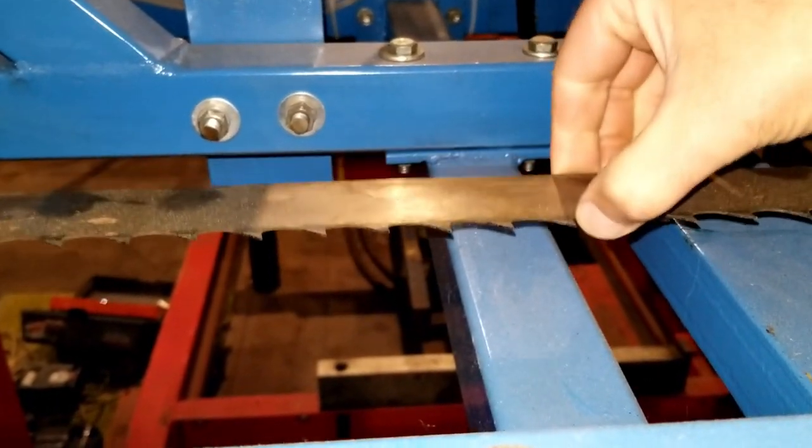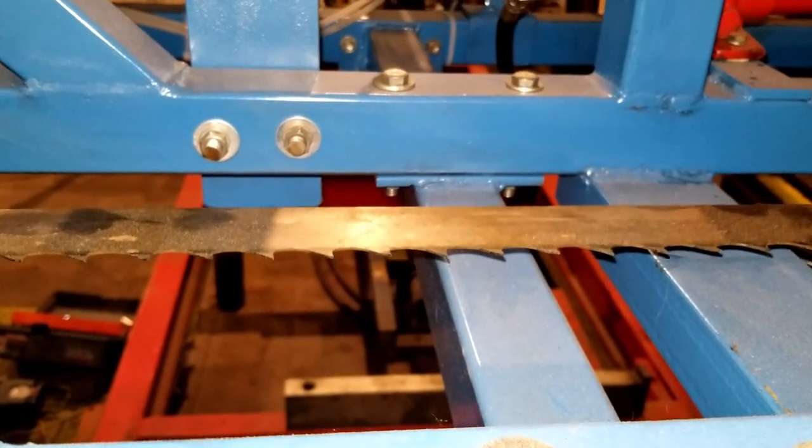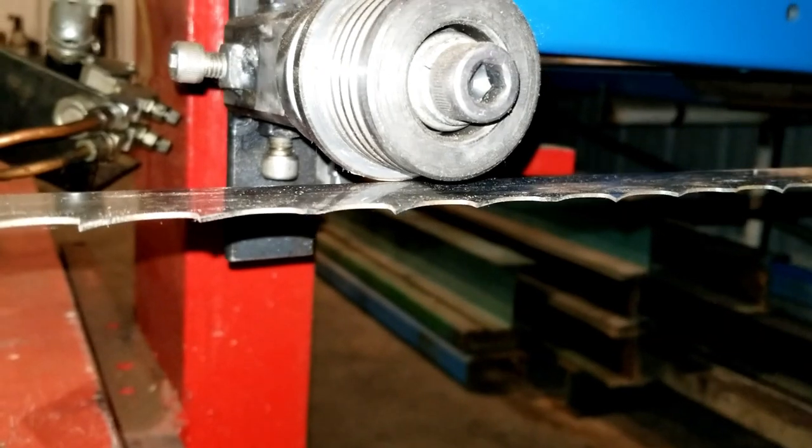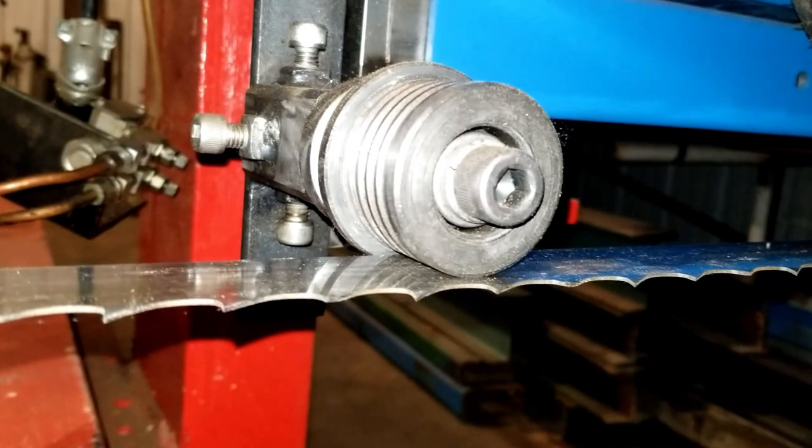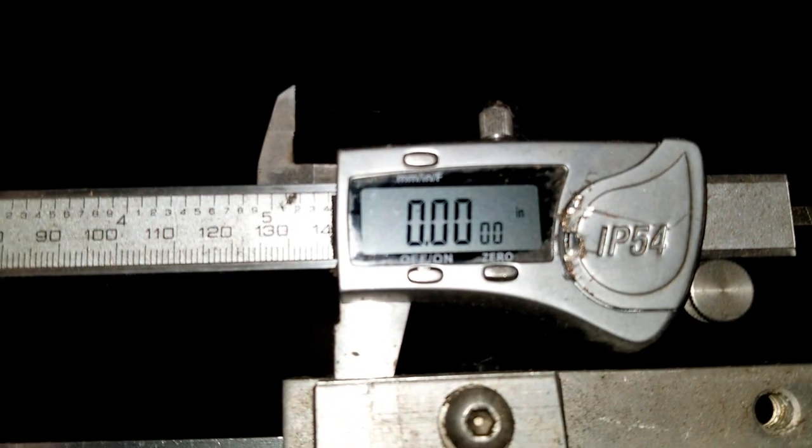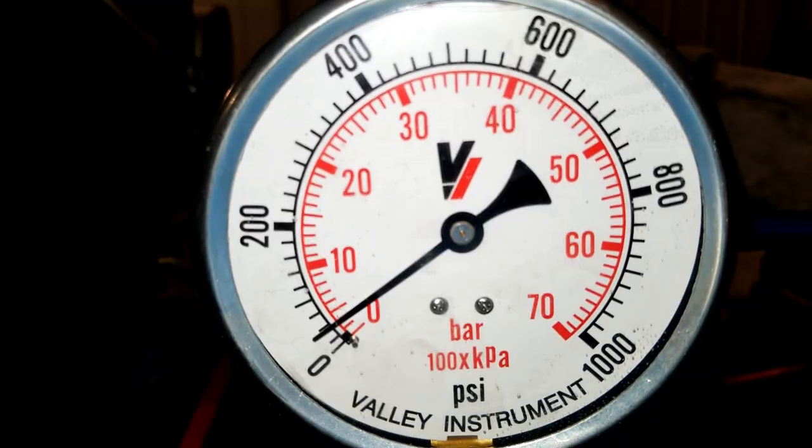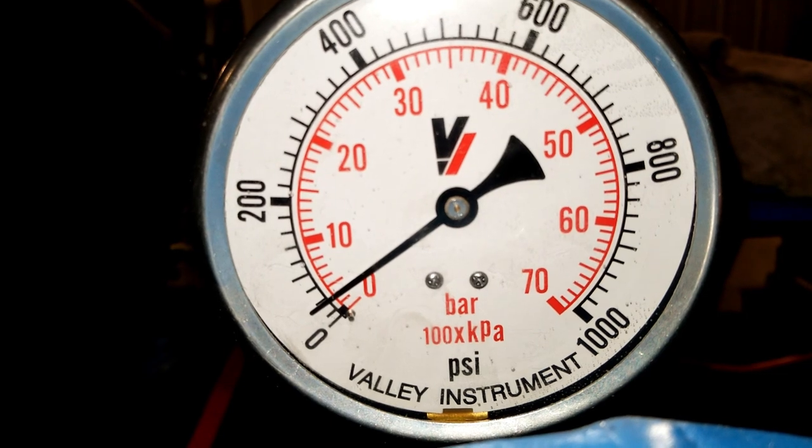So then to start with I will sort of set a zero point for blade tension and I just give it a little wiggle and then we're going to bring it up to where it's barely touching the blade guides and re-zero out my veneer caliper. Now we're starting out at zero on my pressure gauge.